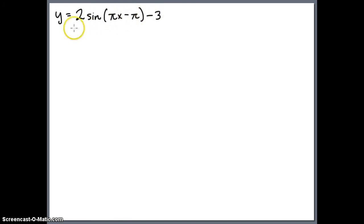So there's really a lot going on, but really the first thing to do is rewrite this as 2 sine, like before, factor out. So if you factor out a pi here, what you're left with is just x minus 1 minus 3.